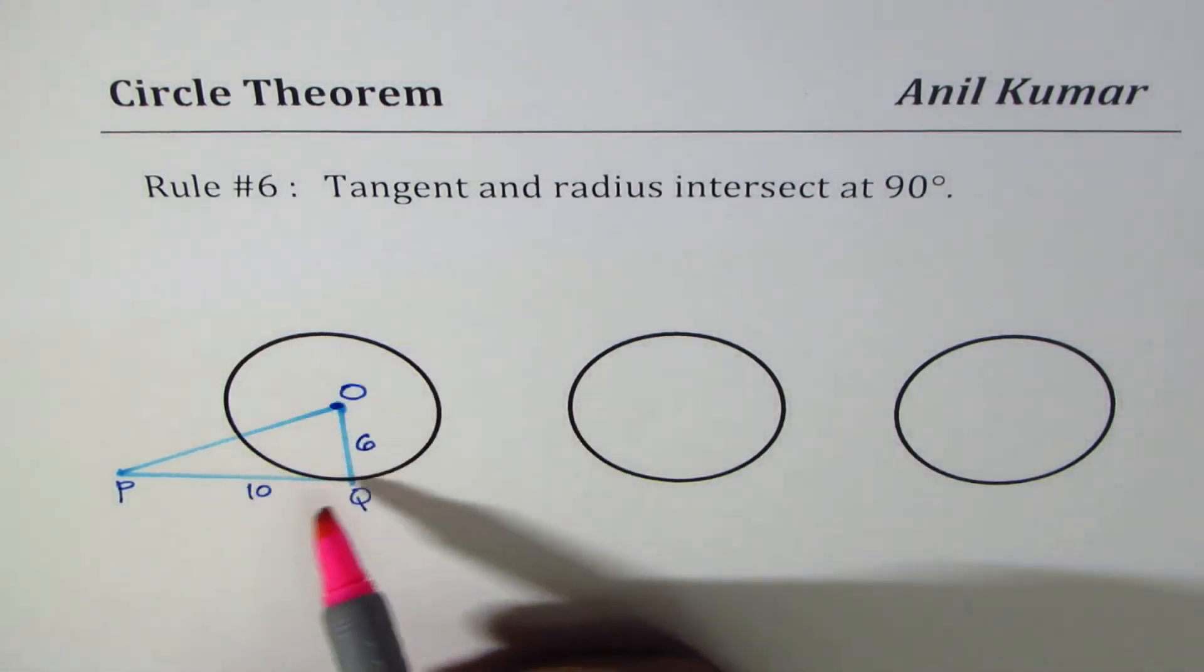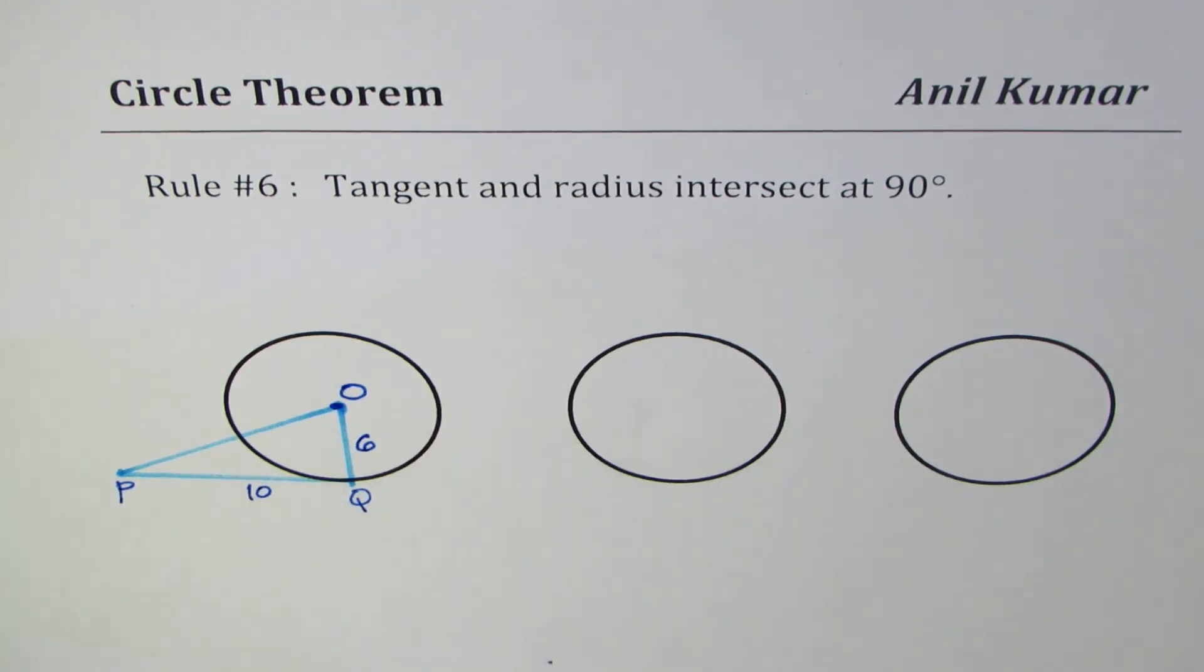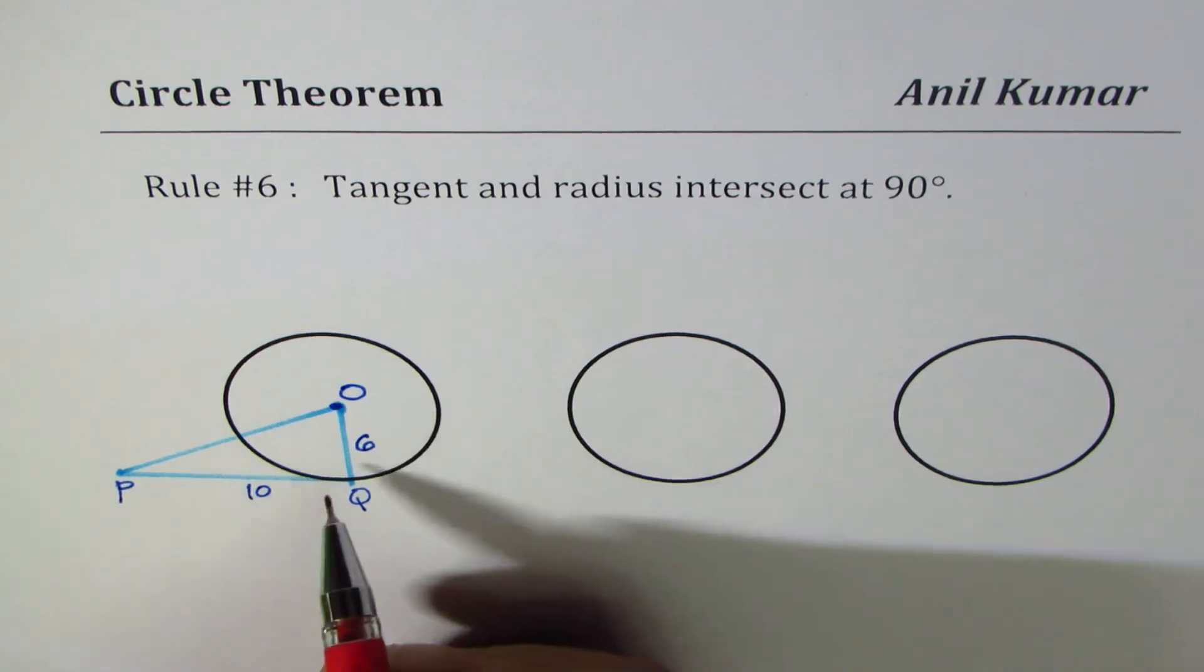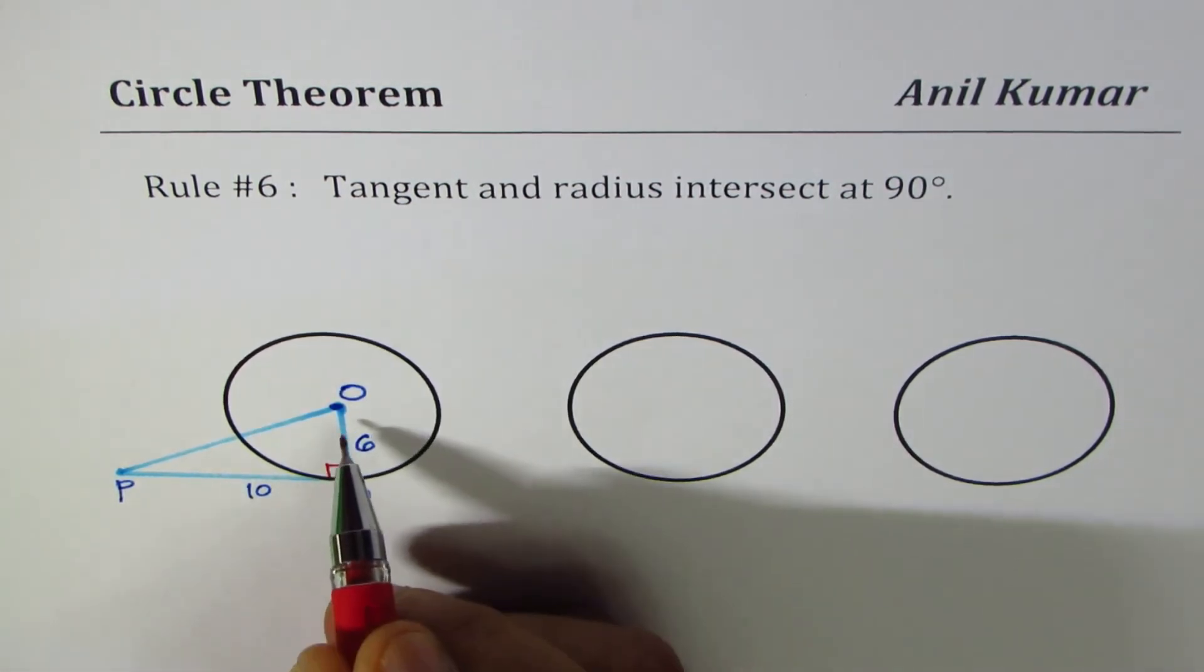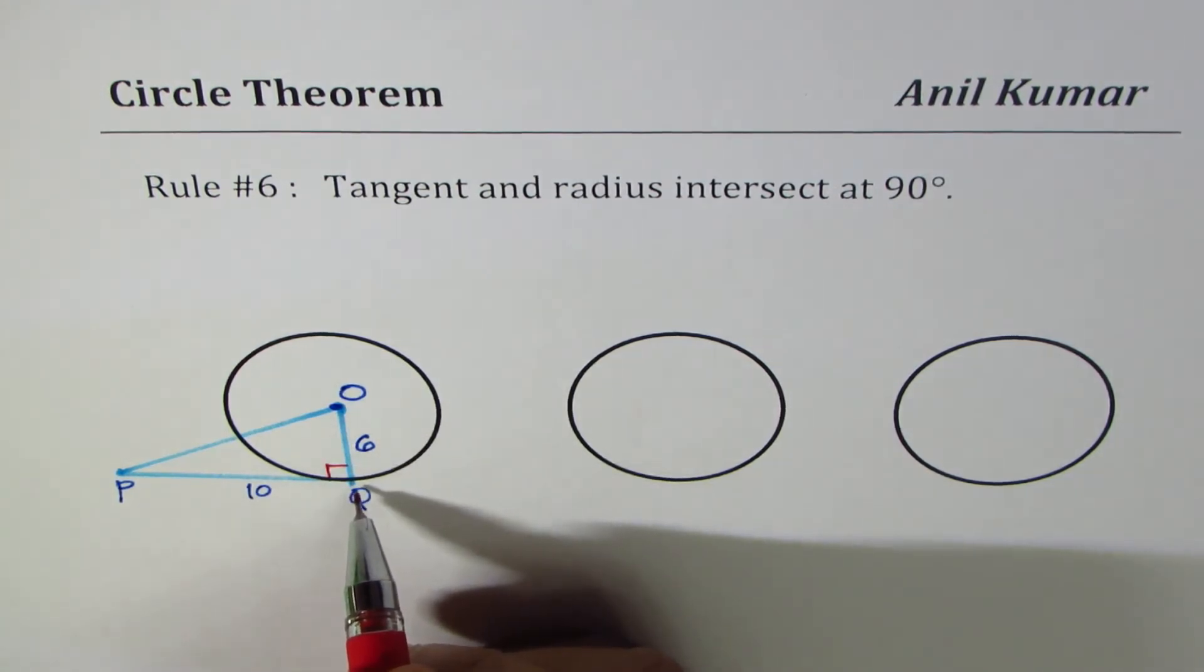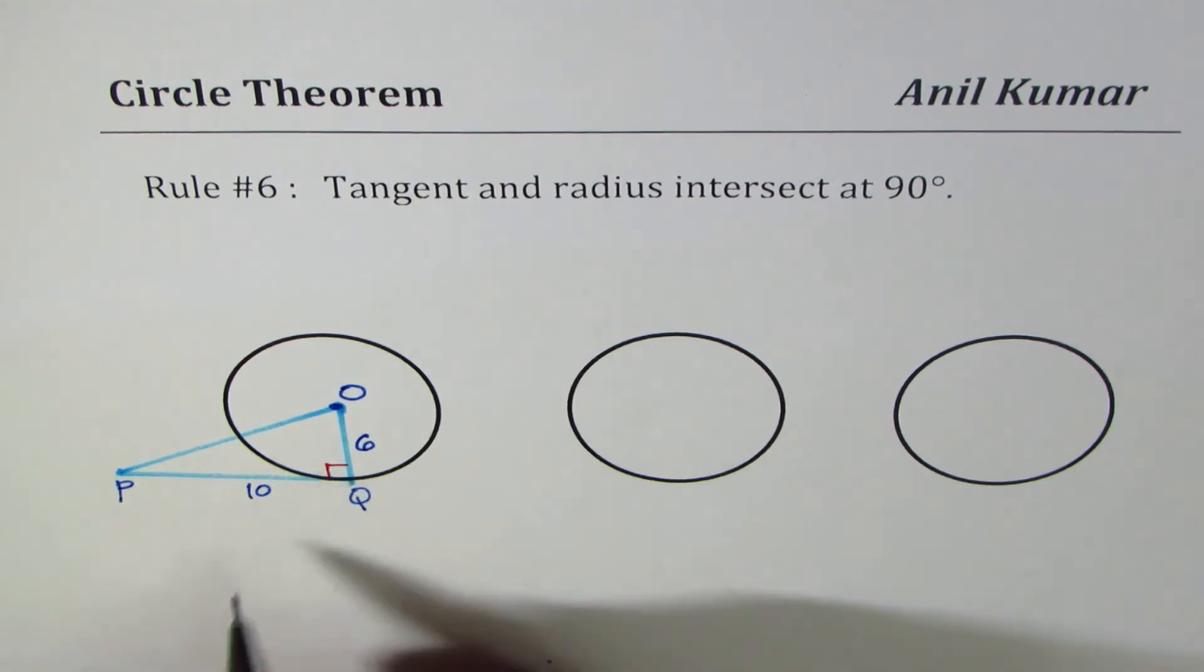So whenever we have a circle, the tangent to the circle makes 90 degrees with the radius. In this figure, we have circle O, tangent PQ, and radius OQ. Both radius and tangent will intersect at 90 degrees, forming a right triangle OPQ.